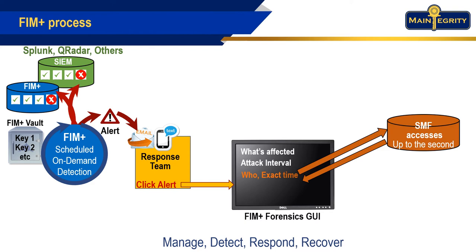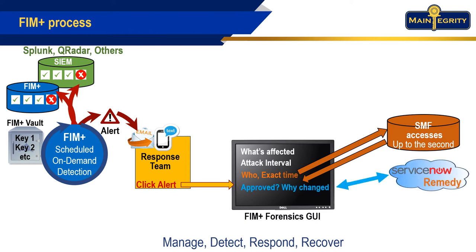Once we know the interval, we can go to SMF and fetch and display any records associated with that component during the interval in question — right up to the second. This reduces much of the concern about having large amounts of information to look through. Once we know the components involved, we can check if they're approved — another click on the FIM GUI takes you out to a ServiceNow instance in the cloud, Remedy on another platform, or even in the mainframe environment, to check if the change was approved.